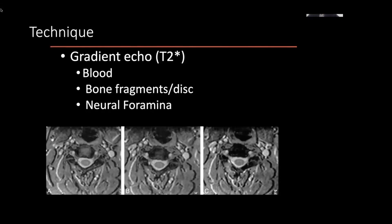Similarly, gradient echo — also called T2-star — is what some people call the hemosiderin sequence because it's typically good for looking for blood products. Some vendors have their own names for newer gradient echo sequences; for example, SWI or susceptibility weighted imaging. GE calls theirs SWAN, which is their own proprietary name.